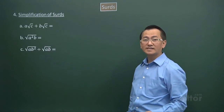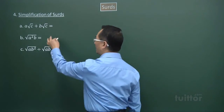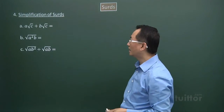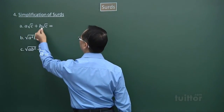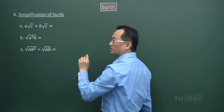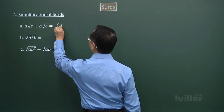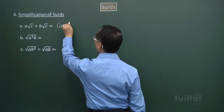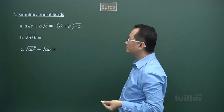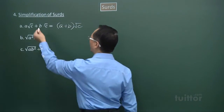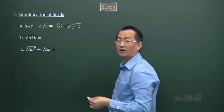Next, we look at some simplification of surds. These three are the most common ones you will encounter. For part a, where we have a times square root c plus b times square root c, the common factor is square root c. We take out a plus b multiplied by square root c — we can add them just as you would with ax plus bx in algebraic form.